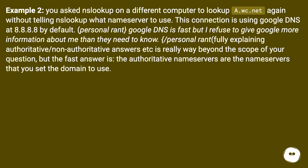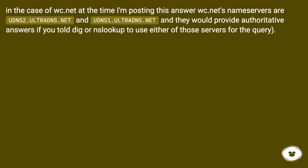Example 2: You asked nslookup on a different computer to look up a.wc.net, again without telling nslookup what nameserver to use. This connection is using Google DNS at 8.8.8.8 by default. Fully explaining authoritative versus non-authoritative answers is beyond the scope of your question, but the fast answer is: the authoritative nameservers are the nameservers that you set the domain to use. In the case of wc.net, its nameservers are udns2.ultradns.net and udns1.ultradns.net, and they would provide authoritative answers if you told dig or nslookup to use either of those servers for the query.